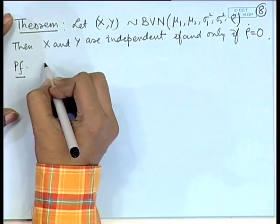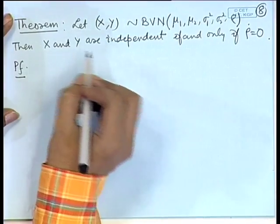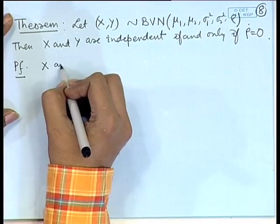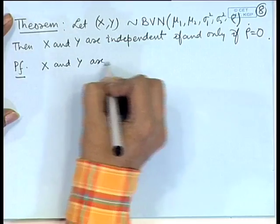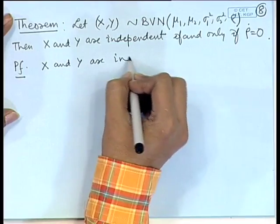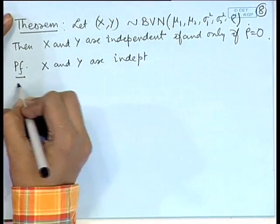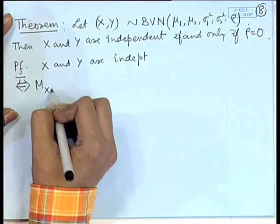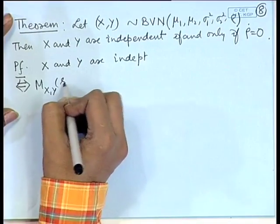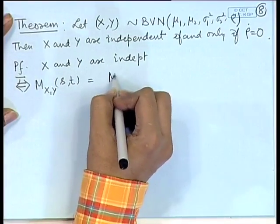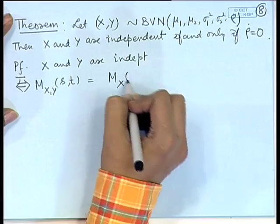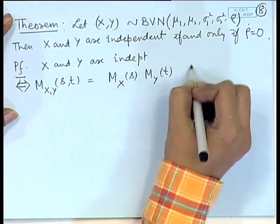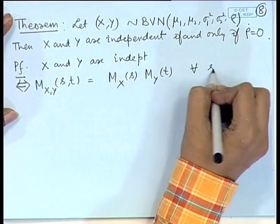To prove the reverse, we make use of the joint MGF. X and Y are independent — this is equivalent to the statement that M_{X,Y}(s,t) equals M_X(s) times M_Y(t) for all s, t.